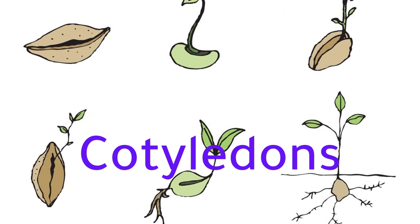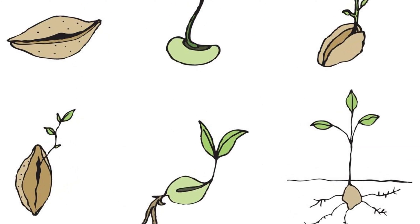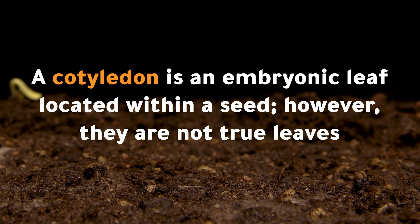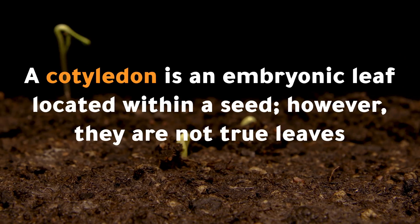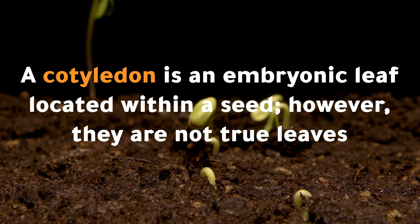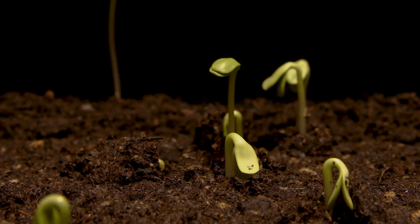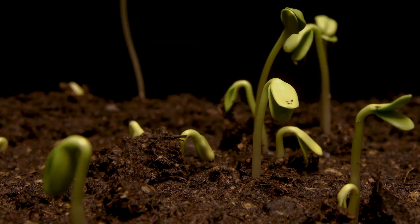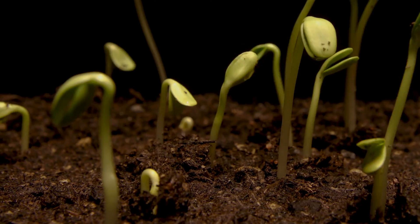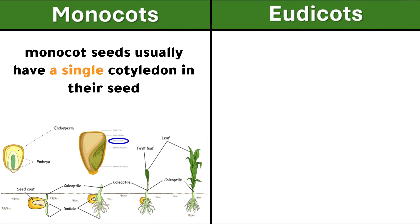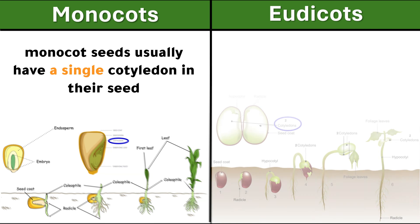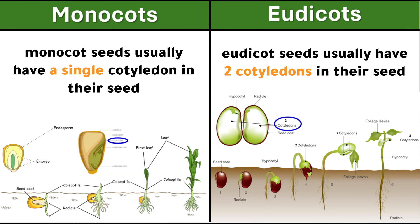A cotyledon is an embryonic leaf located within a seed; however, they are not true leaves. Monocot seeds usually have a single cotyledon, and eudicot seeds usually have two cotyledons.